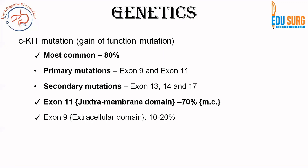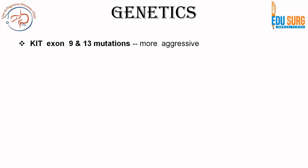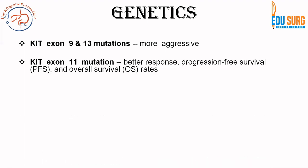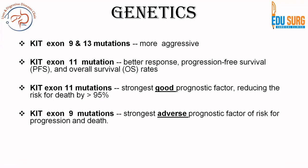Exon 11 is the most common mutation; it is in the juxtamembrane domain and accounts for 70% of CKIT-mutated GIST, while exon 9 accounts for 10 to 20%. Practically, mutations in exon 9 and 13 are more aggressive, whereas exon 11 mutation has better response, progression-free survival, and overall survival. Exon 11 mutation improves overall survival by 95%, while exon 9 mutation is the strongest adverse prognostic factor and a marker of progression and death.